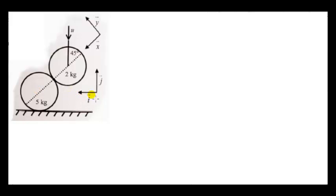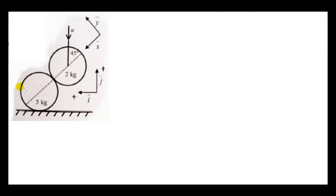The unit vector i could point to the right as is the usual convention, but here it's pointing to the left, in the direction of the final velocity of the five kilogram sphere. The directions are arbitrary and this might make the calculation a little bit simpler. So the positive i or x-axis is pointing to the left. We will apply conservation of momentum in the x or horizontal direction only.